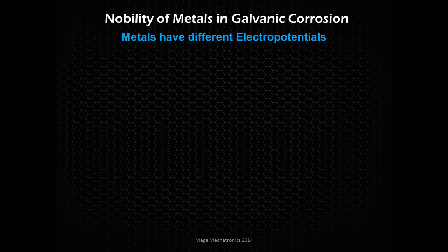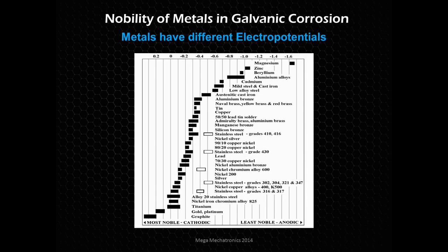Now we're going to look at the nobility of metals in galvanic corrosion, which is a subset of corrosion. This is where metals have different electropotentials. This chart here shows the difference in electropotentials — at the top you see numbers from negative 1.6 to 0.2, with magnesium and zinc at the very top, then mild steel, cast iron, copper, stainless steel moving down, and gold near the bottom.